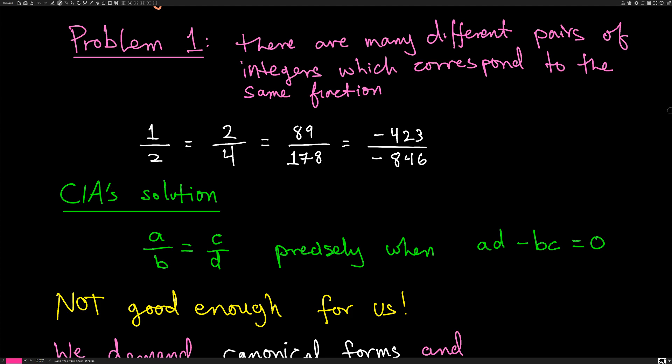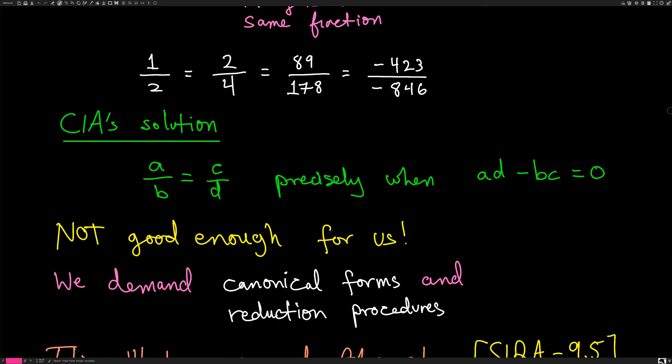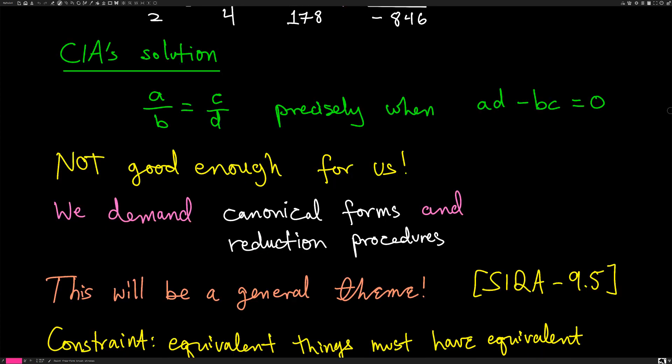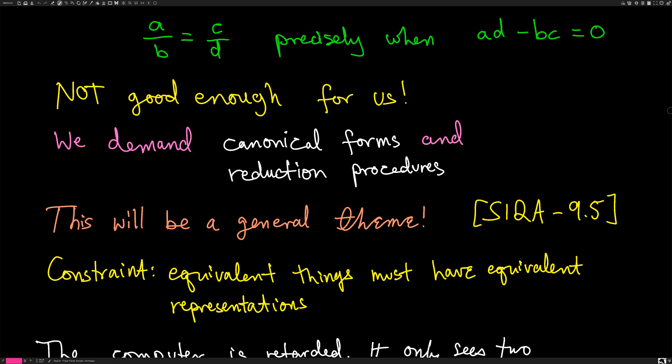This is not good enough for us. We demand, in practice in our programming languages, two things: canonical forms and reduction procedures. This is a general theme — talked about it in SICA 9.5 over on the Big Black Canon channel. This is a general constraint in Q anal that does not exist in standard math. It's something that is really important from computing and doesn't really show up much in math.